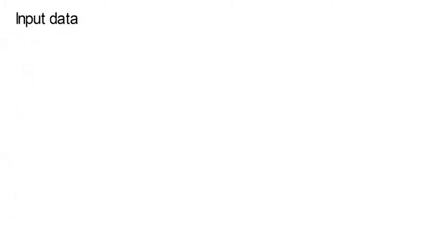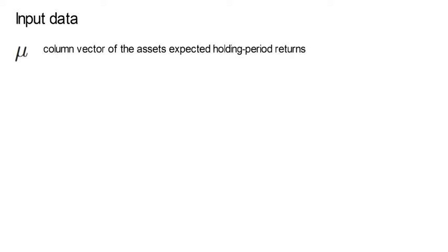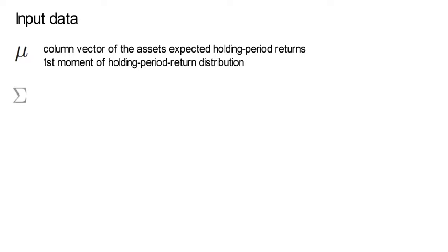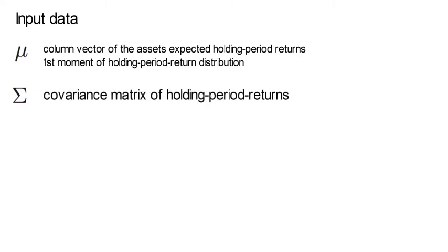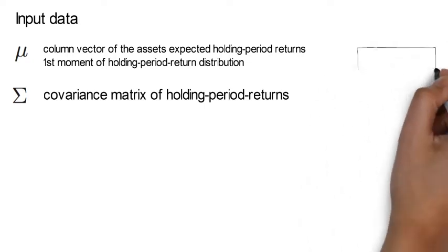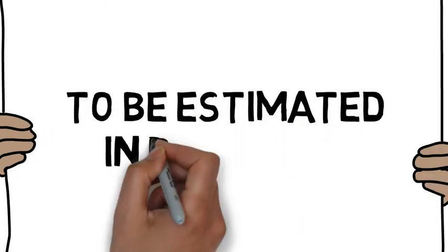We now come to the input data first. µ is a column vector of the assets' expected holding period returns. These are the predictable components of asset holding period returns, or the first moments of the holding period return distribution. Capital Sigma is the covariance matrix of holding period returns. Sigma quantifies the co-movement of the different noise components. In real-life applications, µ and Sigma need to be estimated.